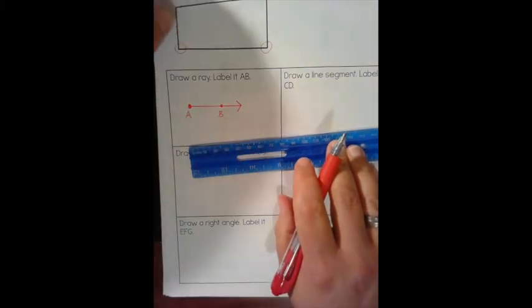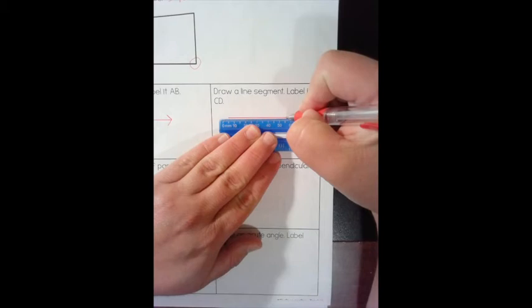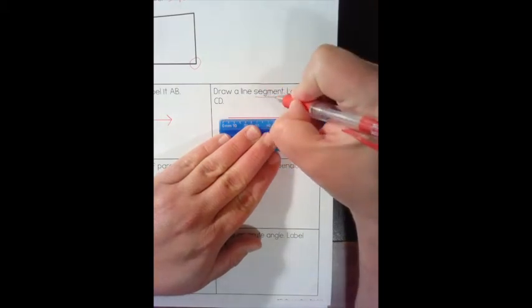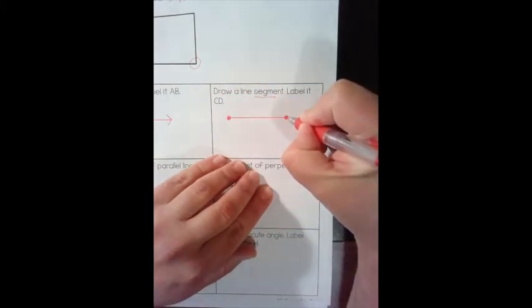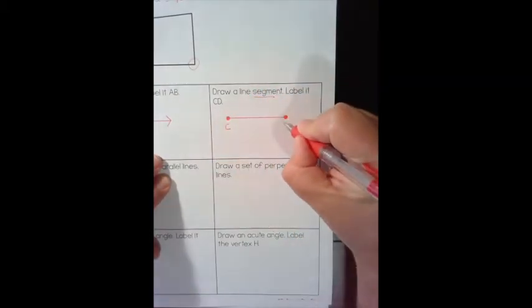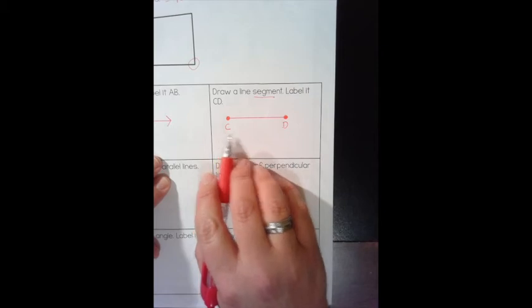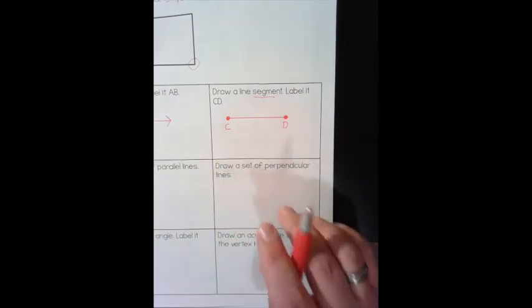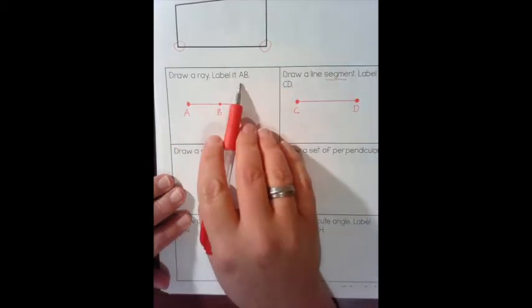Now draw a line segment and label it CD. A line segment has two end points. So I draw an end point here and an end point there and label them C and D. With a line segment, you can flip-flop the letters — you could put D here or C here, it doesn't matter. With a ray, though, it matters — you can't flip-flop your letters because the first letter is your end point.